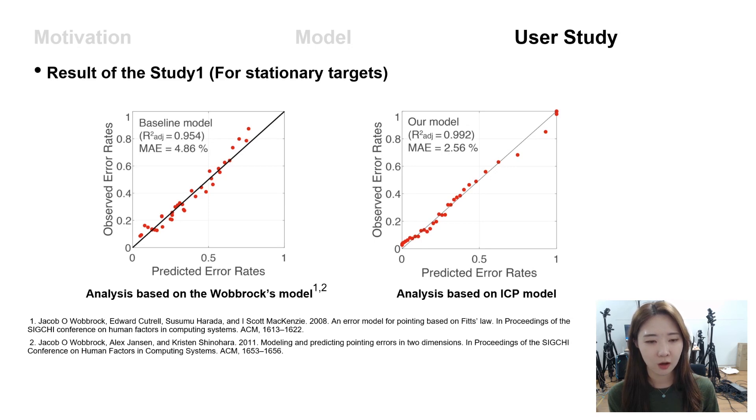As a result, our r-squared value of the ICP model was 0.992, and the results show that the ICP model successfully predicts the error rate. We used the Wobbrock's model as a baseline in the study one.